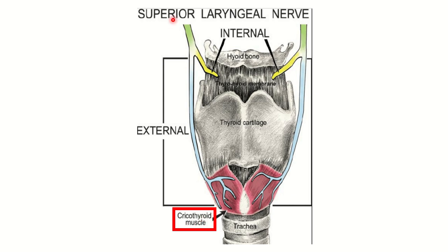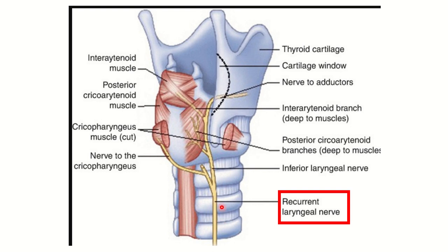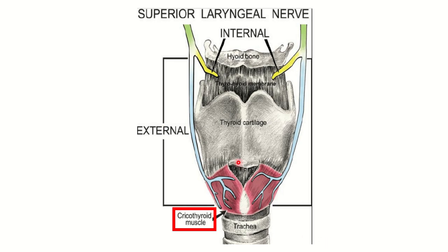The superior laryngeal nerve gives two branches: the internal laryngeal and the external laryngeal. The external laryngeal branch of the superior laryngeal nerve supplies the cricothyroid muscle. The rest of the laryngeal muscles are supplied by the recurrent laryngeal nerve, which is also a branch of the vagus nerve and supplies all muscles of the larynx except the cricothyroid.